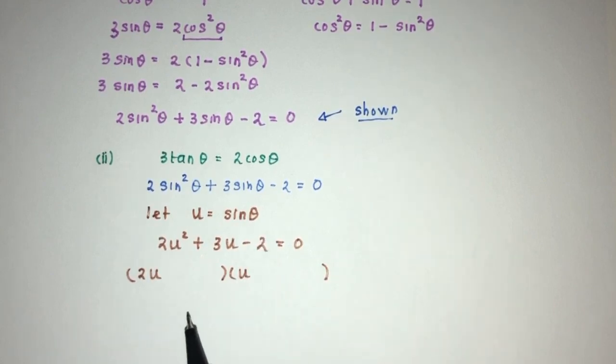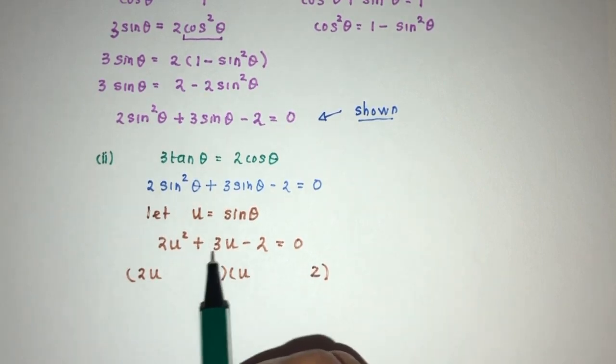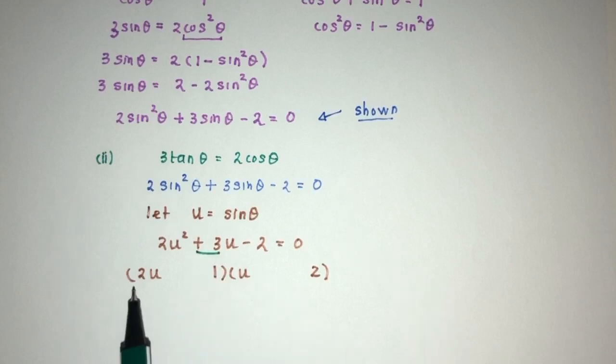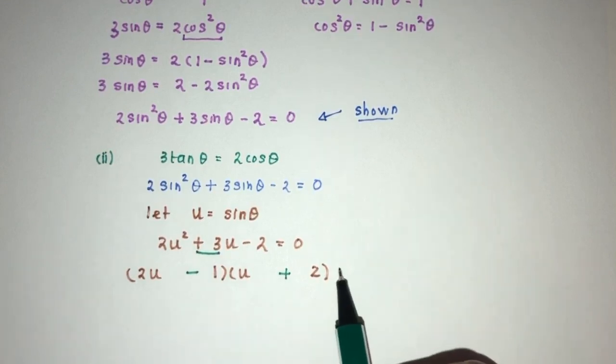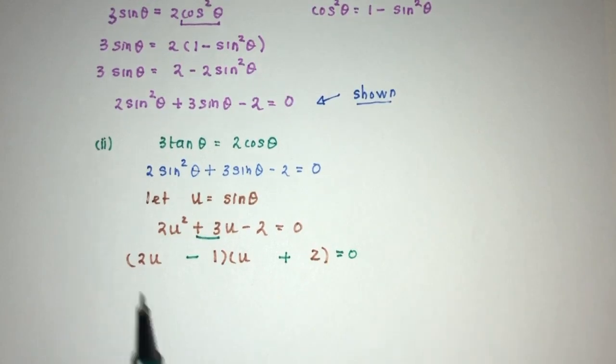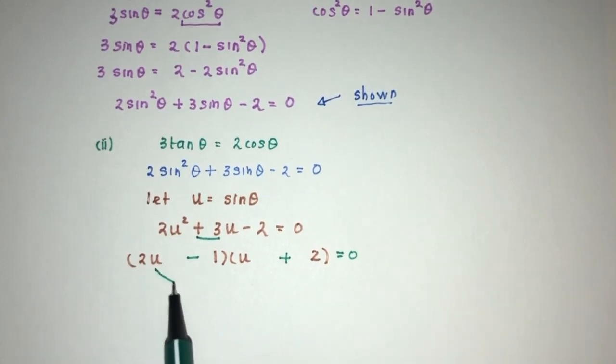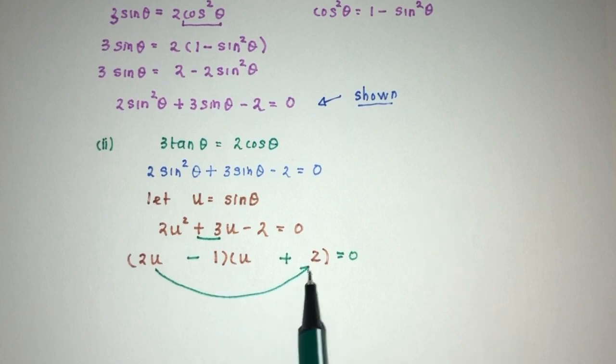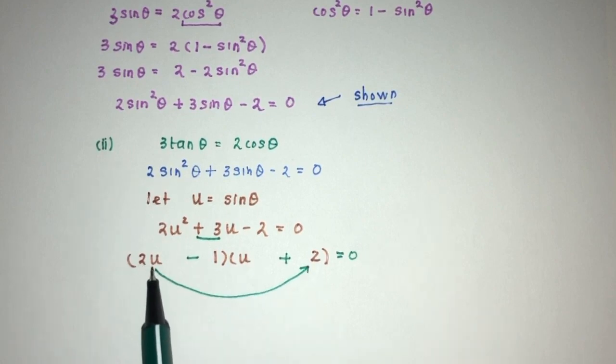That will be 2u times u for 2u². And here we have 2. So 2 is 2 times 1. Let's put 2 here and 1 here. Now, because we're trying to find the value of +3, we have to have +4 and then -1.